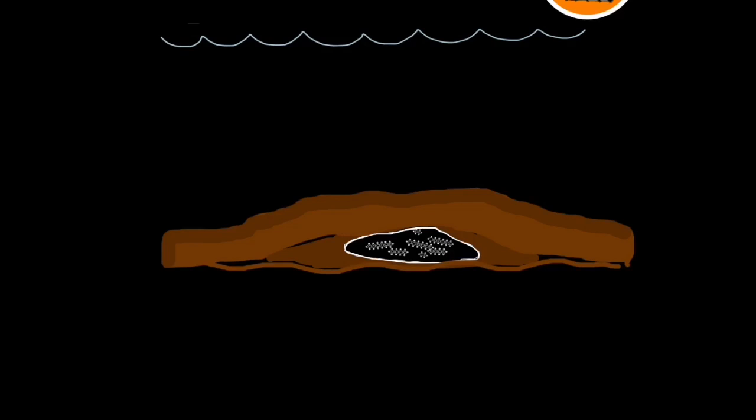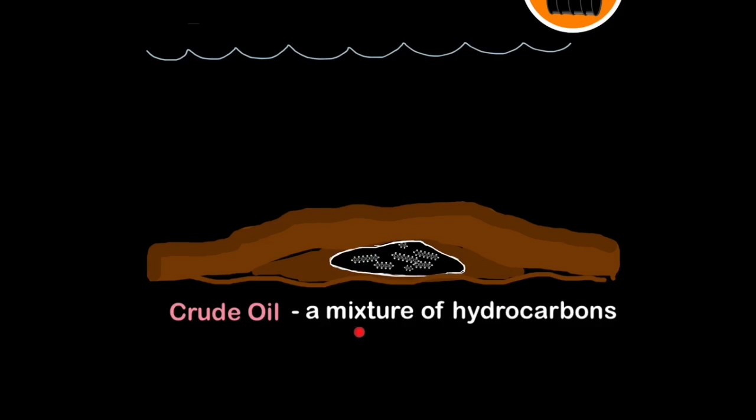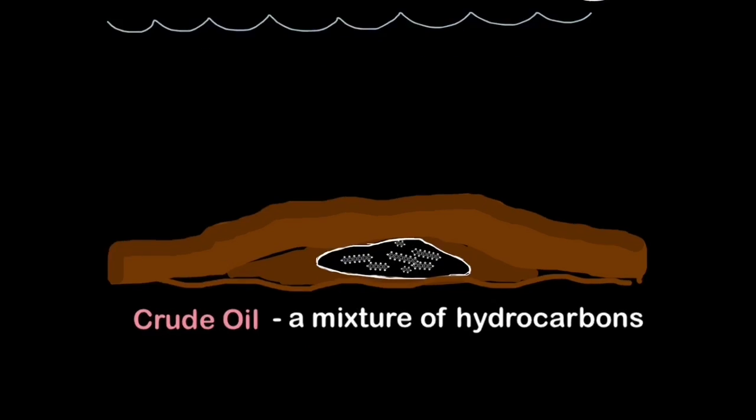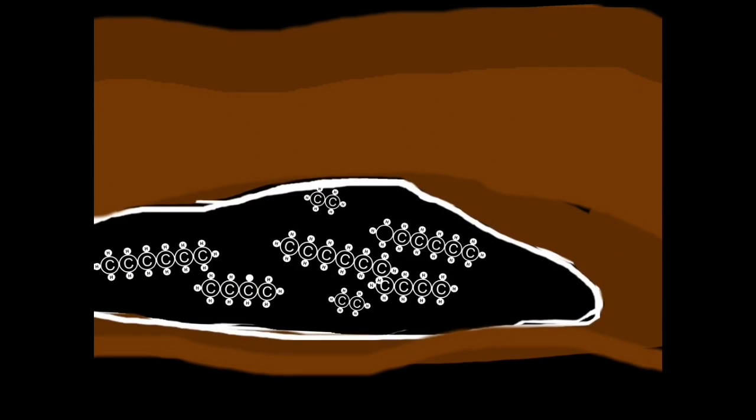But what is crude oil exactly? Crude oil is a mixture of a certain type of molecule called hydrocarbon. So crude oil is a mixture of hydrocarbon molecules. If we zoom in, here you can see lots of different hydrocarbon molecules.